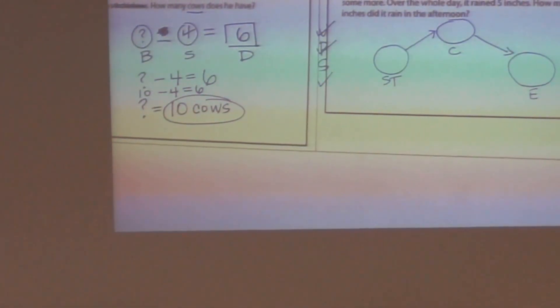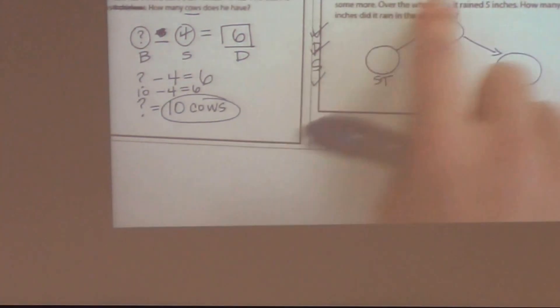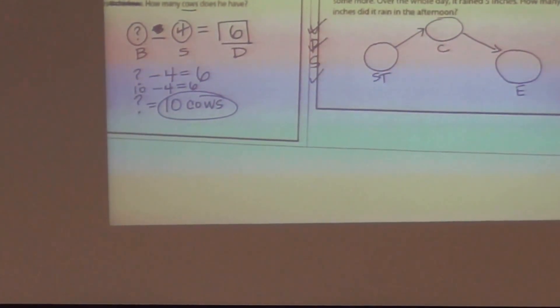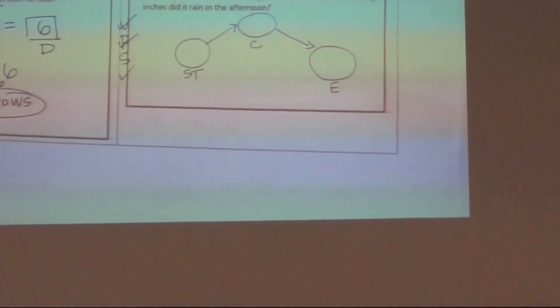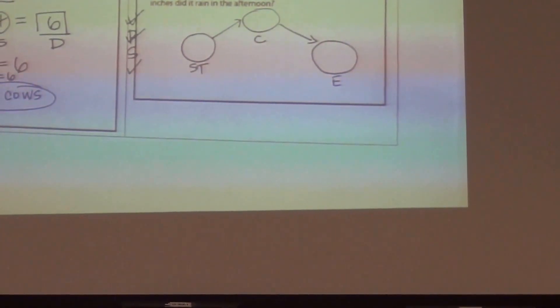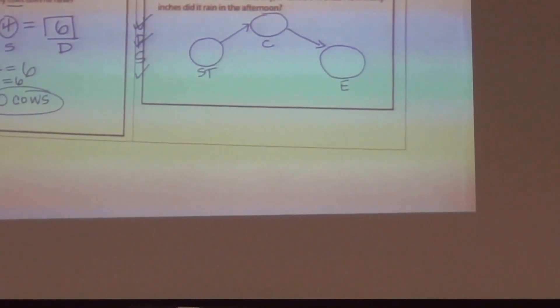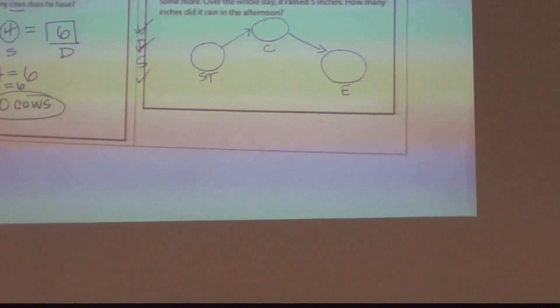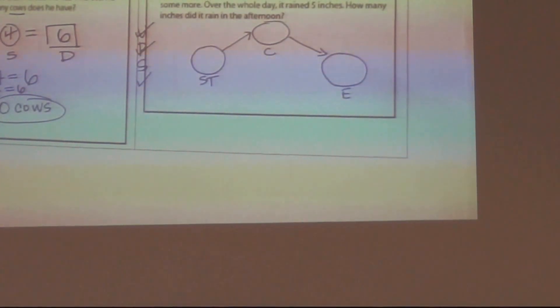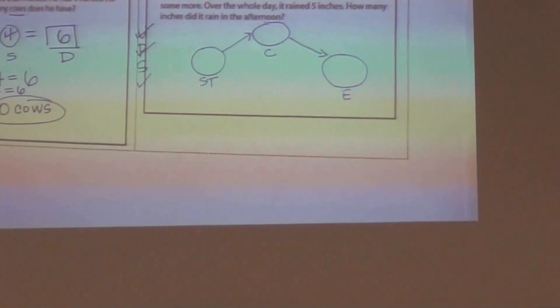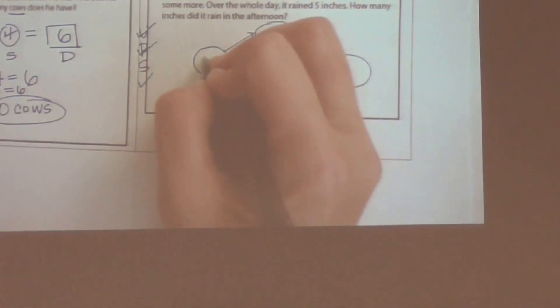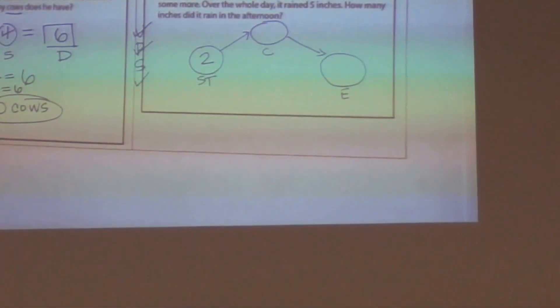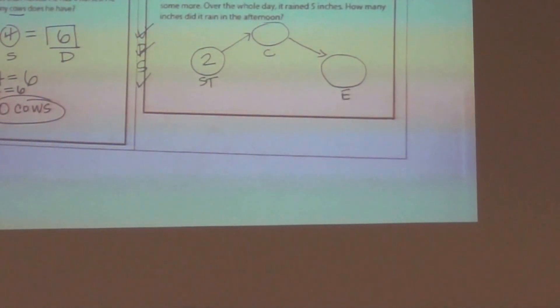Now we're going to put in our numbers and solve. In the morning it rained two inches. That two—do you think that's a number that we're going to need here? Yes. Two is telling me about what amount? Is it the start amount of rain, the change, or the end amount? The start. It is the start amount. So let's go ahead and check off two and write two in the start box.